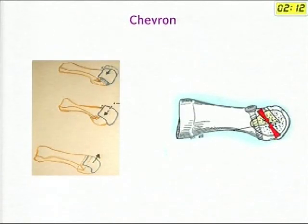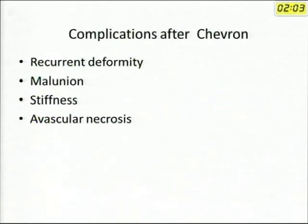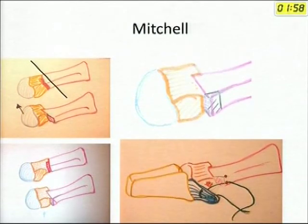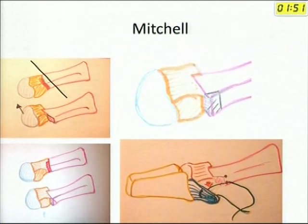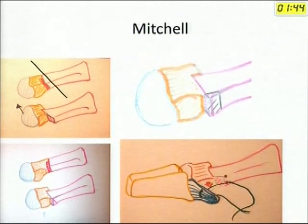Chevron is a very commonly done procedure and a useful osteotomy. You do this chevron osteotomy — a distal osteotomy — and shift the metatarsal head laterally. Common complications are recurrence and avascular necrosis if you are not careful with the soft tissues. Mitchell's osteotomy is a step-cut osteotomy where you make a step cut, remove a bit of bone, and transfer the metatarsal head laterally. You can fix it with wire, a screw, or K-wires. However, this shortens the metatarsal, so the risk of transfer metatarsal pain is very high.